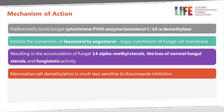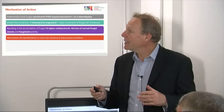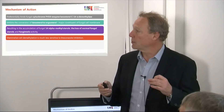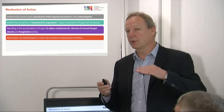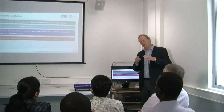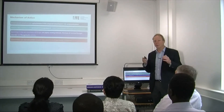Like all the other azoles, itraconazole inhibits the production of ergosterol inside the fungal cell. Human cells don't have ergosterol — we produce cholesterol — so it's selective for fungal cells. It acts through the enzyme 14-alpha-demethylase. Toxic intermediate molecules accumulate, killing the fungal cell. Because we don't produce ergosterol, this drug has limited toxicity for human cells, though it does have some toxicity.